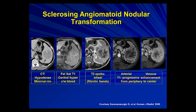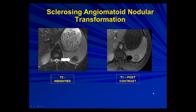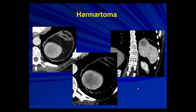Sclerosing angiomatoid nodular transformation (SANT) is an uncommon entity that often has a characteristic spoke-wheel pattern due to fibrotic bands, with progressive enhancement from the periphery to the center progressing from the arterial to the portal venous phase on MRI. It doesn't always have the spoke-wheel pattern — it can be more heterogeneous and less specific in some patients.